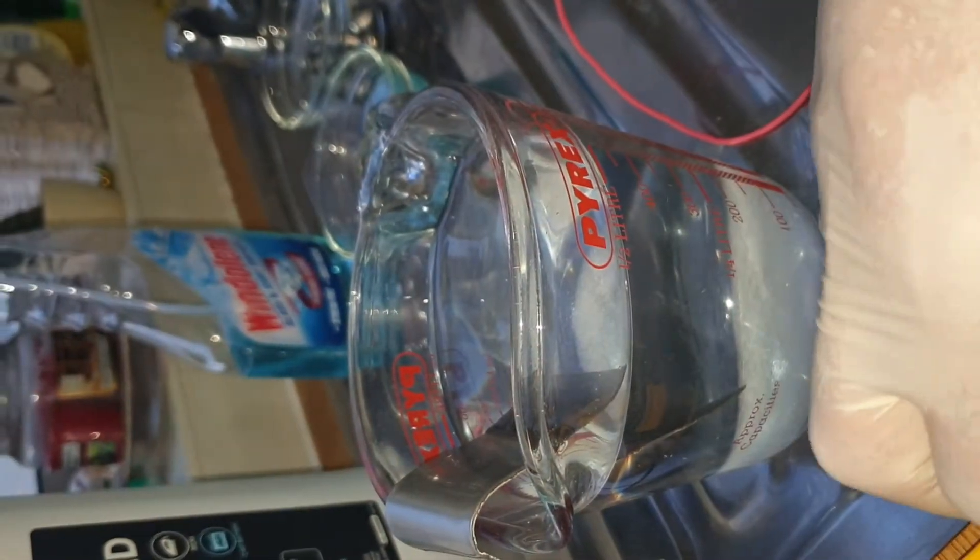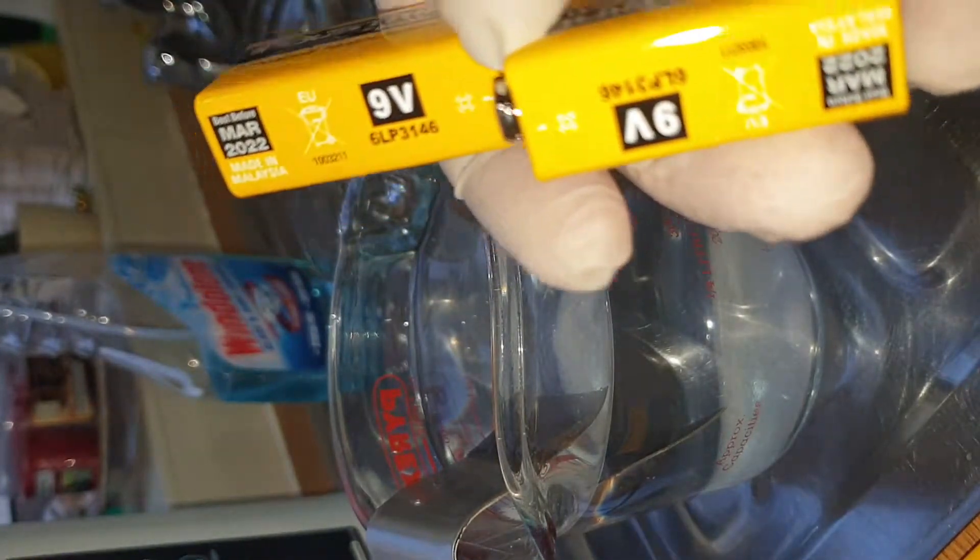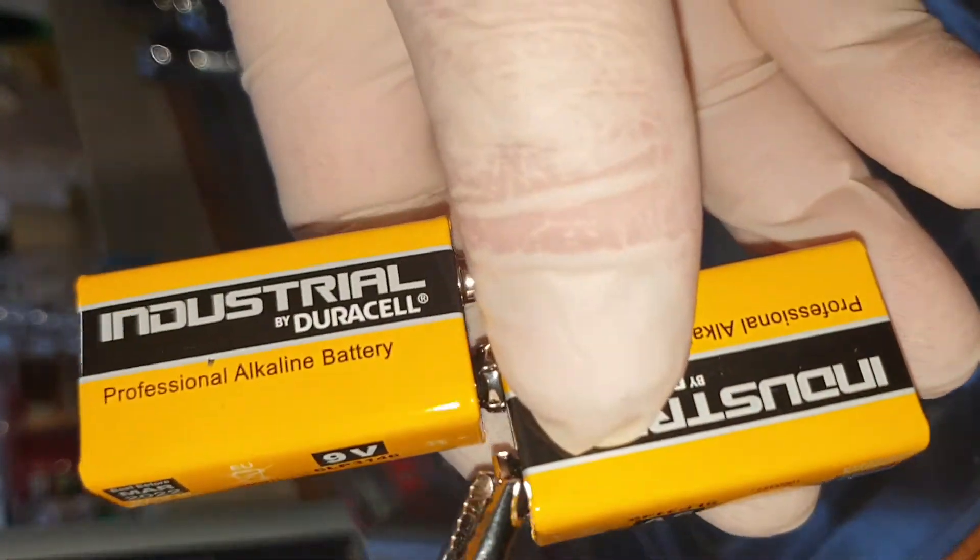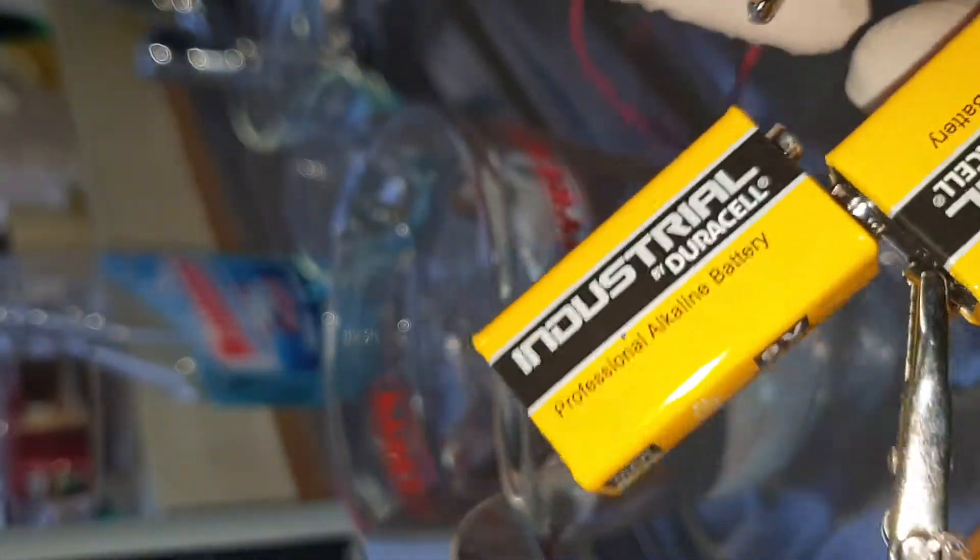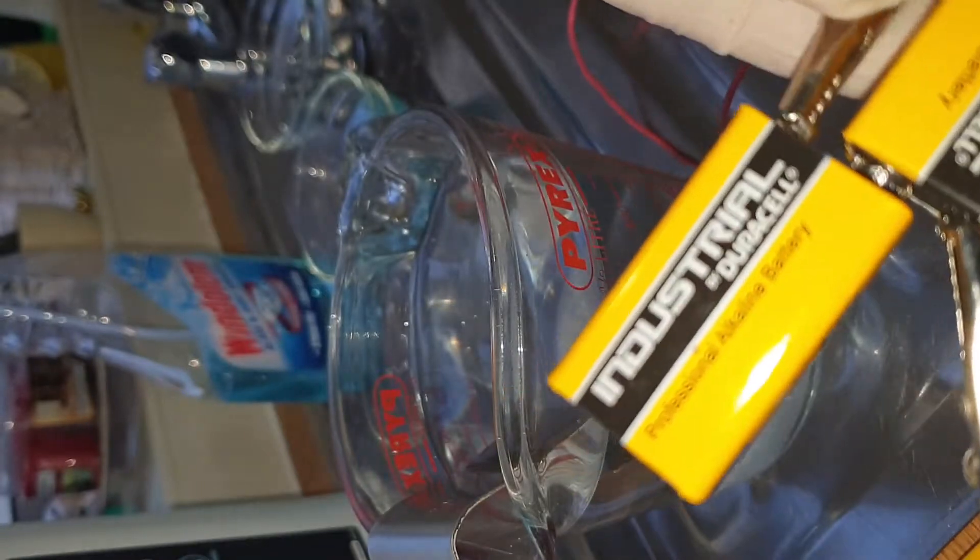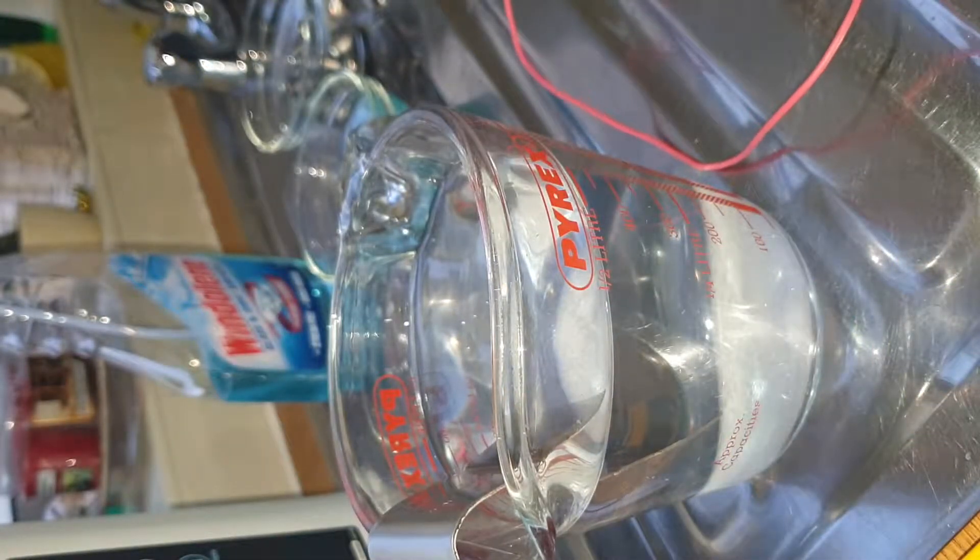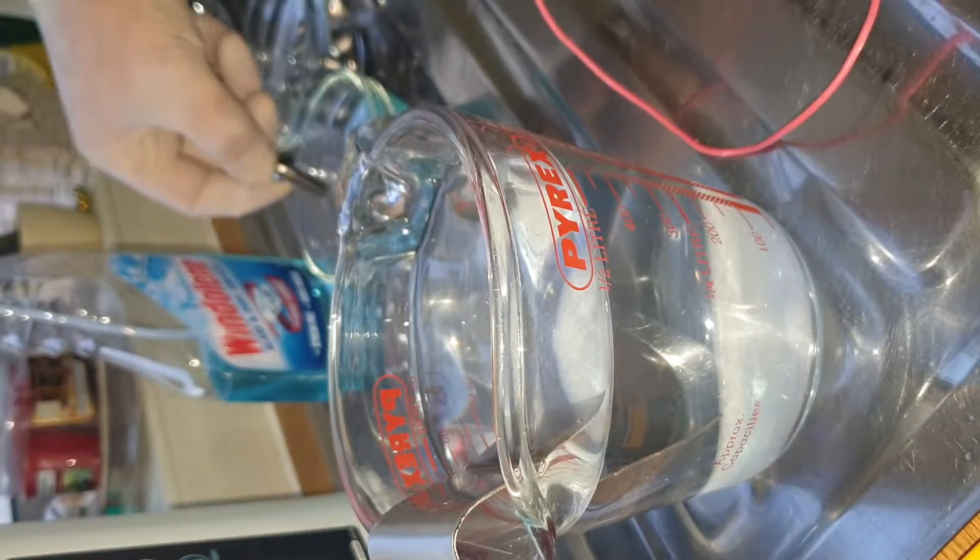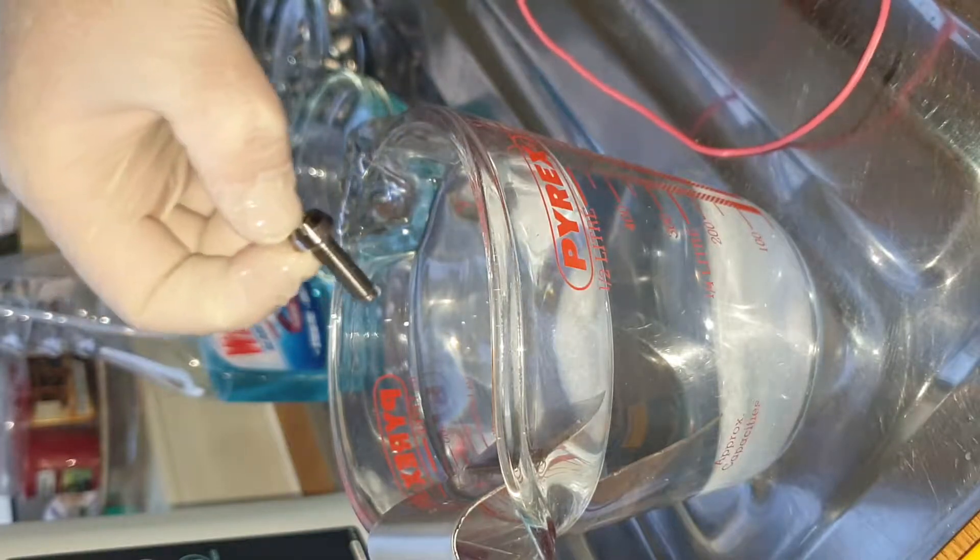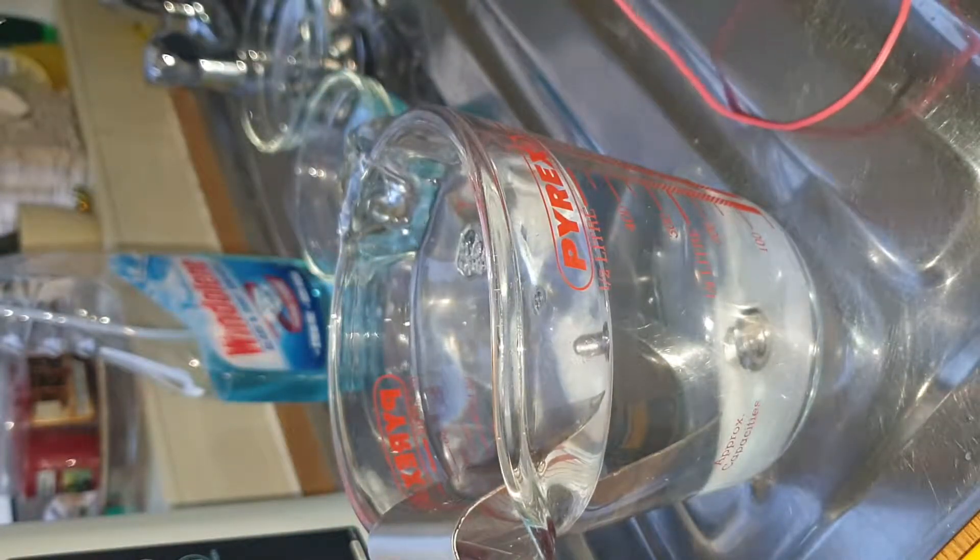We start off with two batteries, clip them positive to negative. Black wire goes on there, red wire on the end of that one. Take our bolt out of the window cleaner, drop it straight in our deionized water and trisodium phosphate mix.